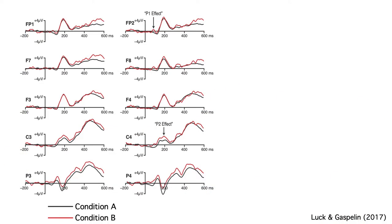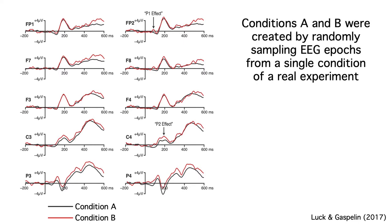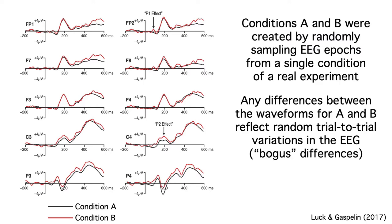Here's an example of a simulated experiment that makes this point. I took real data from a single condition in a single group of subjects and randomly divided the trials into two sets. I called these two sets condition A and condition B, but the trials were just randomly divided. Any differences between the two conditions in the grand average waveforms are just random differences due to noise in the data.